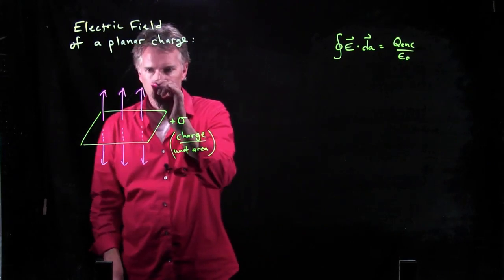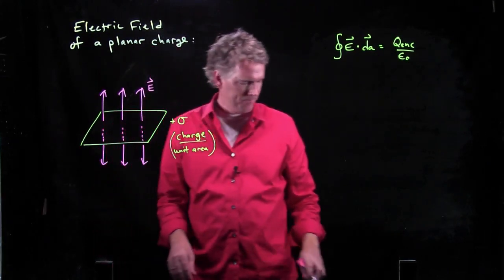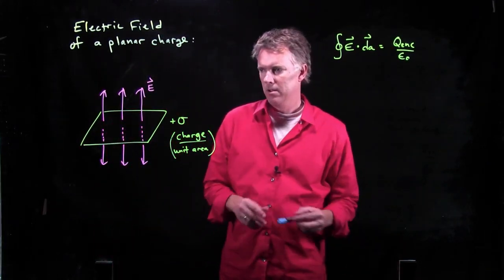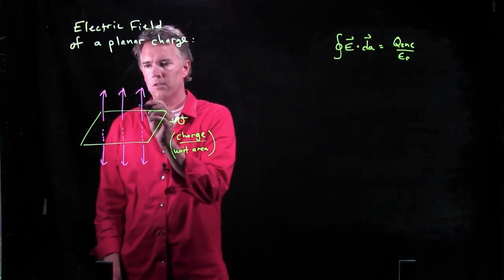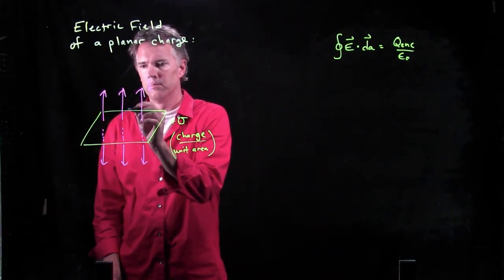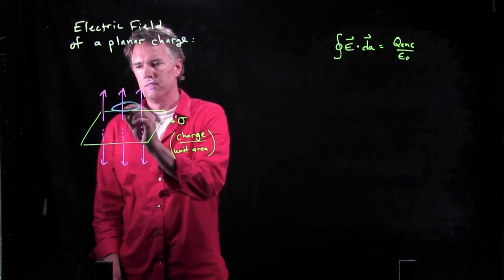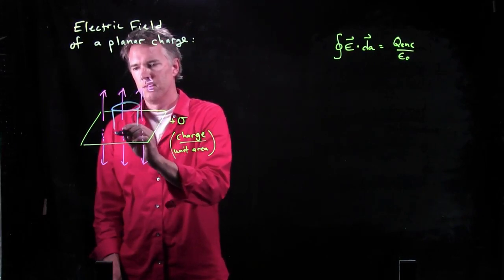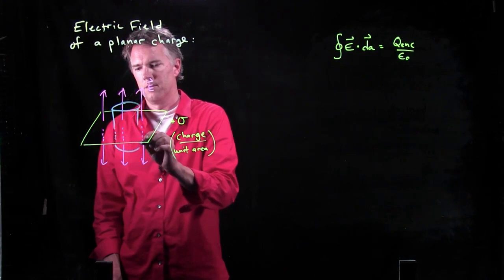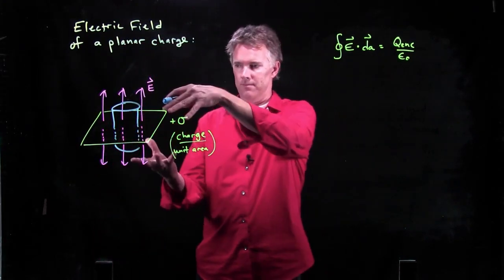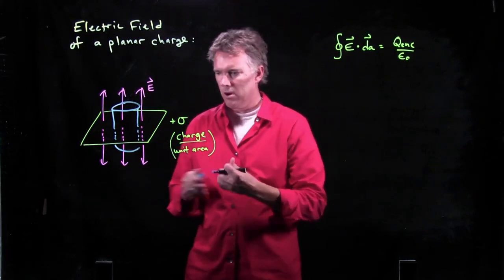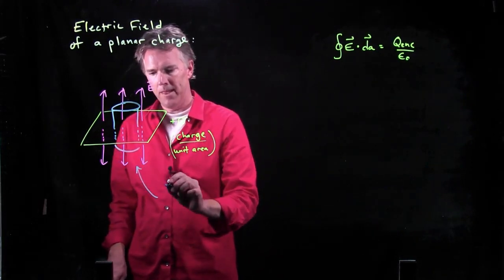Well, remember our E field is pointing up or pointing down. So we're going to draw a surface that looks like this. Okay? It's a little can.